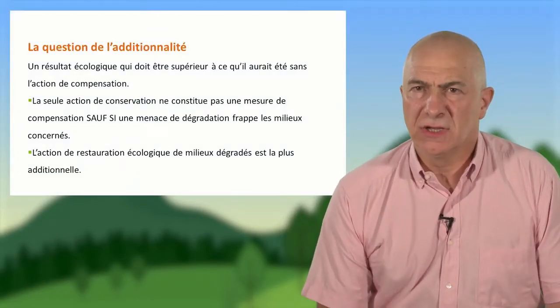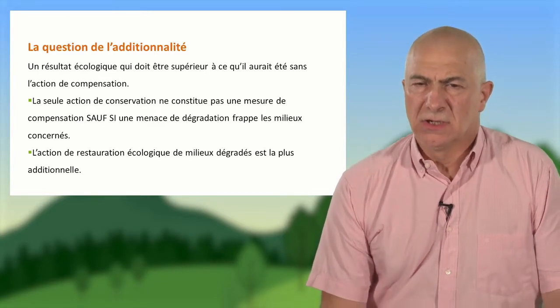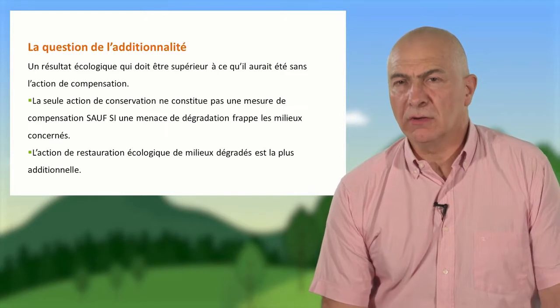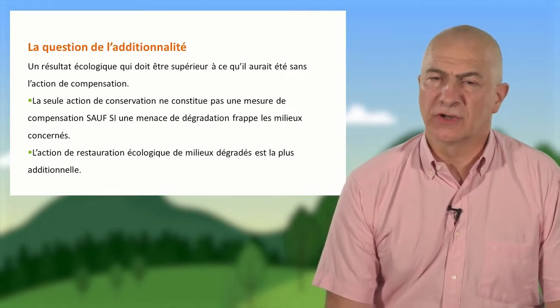La troisième question fondamentale est la question de l'additionnalité. L'additionnalité correspond à une action qui doit apporter un résultat écologique supérieur à ce qui aurait été sans la mise en œuvre de l'action de compensation. Ainsi, la seule conservation d'habitat en bon état écologique ne peut pas correspondre à une mesure compensatoire, sauf si une menace existe. Par exemple, une menace endogène liée au milieu lui-même, comme c'est le cas d'une pelouse sèche qui, en évoluant, se ferme progressivement et voit ainsi son niveau d'intérêt écologique diminuer.